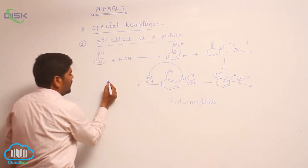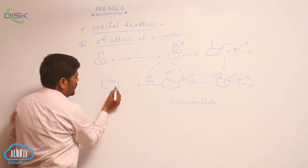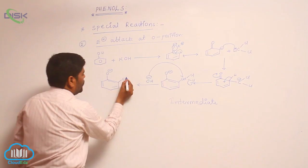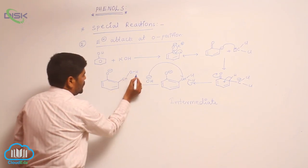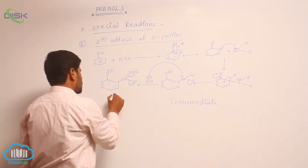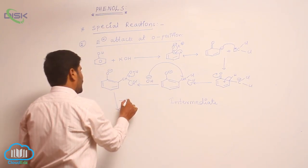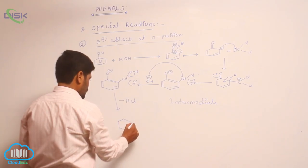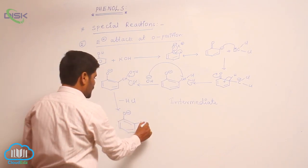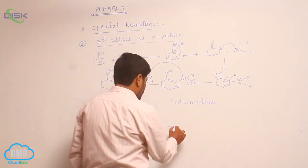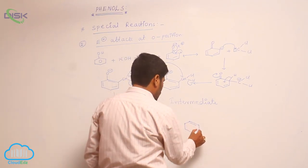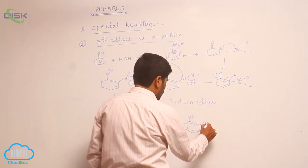This intermediate reacts with OH minus. Attack of OH minus occurs, followed by loss of Cl minus. The result is O minus, then CH–OH, with Cl present. This bond is polarized, leading to loss of another Cl minus.